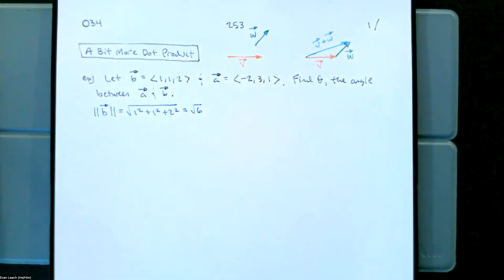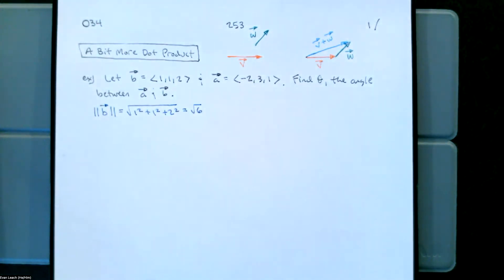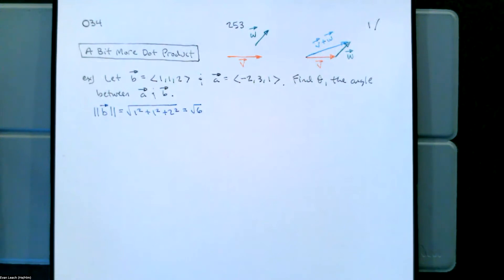Today we've got a little bit more dot product to talk about. We've talked about how we can find the dot product, and we've talked about one thing that it gives us: the angle between a couple of vectors. So let's take a moment and find the angle between these two vectors using the dot product.